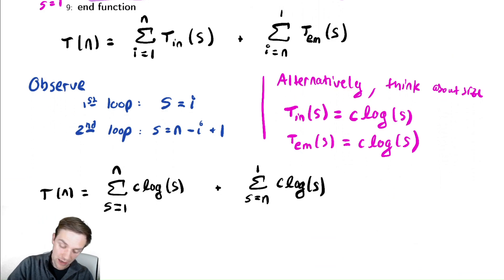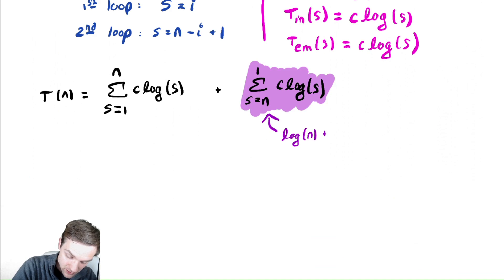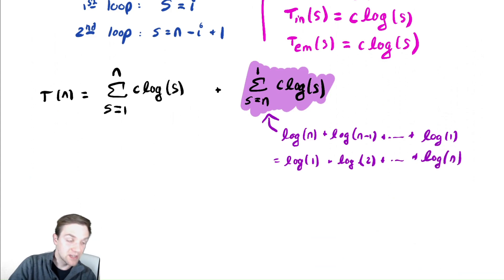Notice that this last summation, I will show this once and we don't need to do this in the future. This last summation here, I can write as log of n plus log of n minus 1 plus all the way down until log of 1. If I swap, the order of that summation is the same as log of 1 plus log of 2 plus up until log of n. Because the size is only ever changing by 1, the order in which I write those terms is not going to be meaningful.